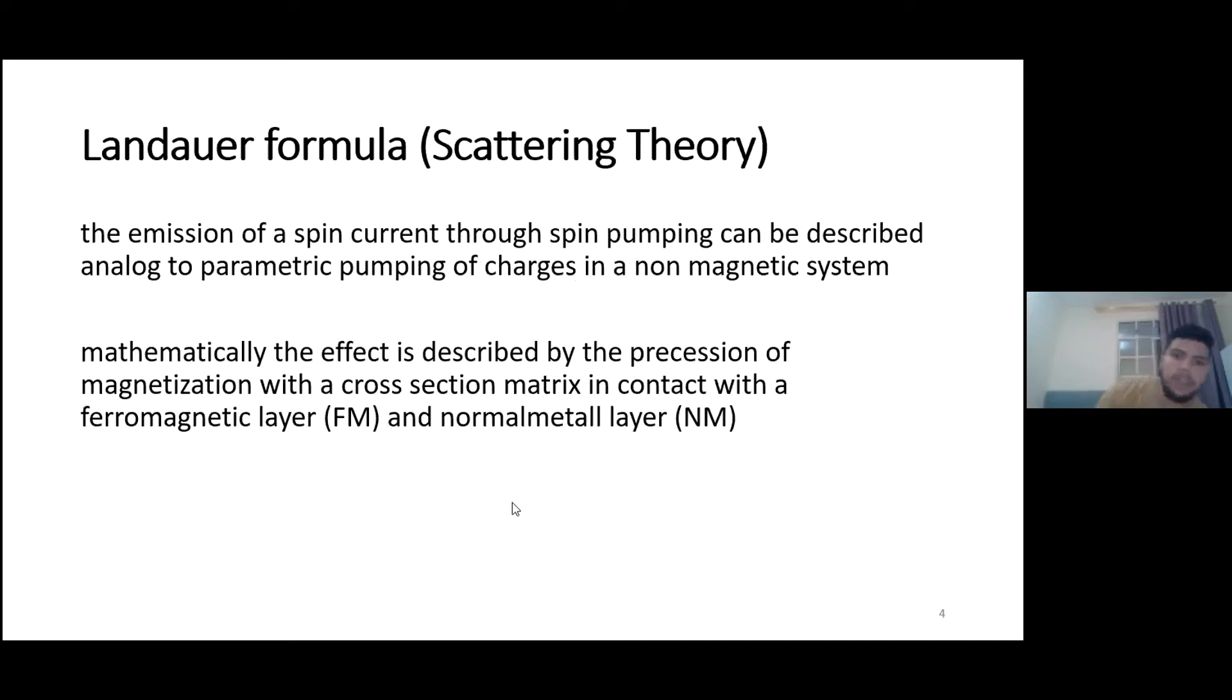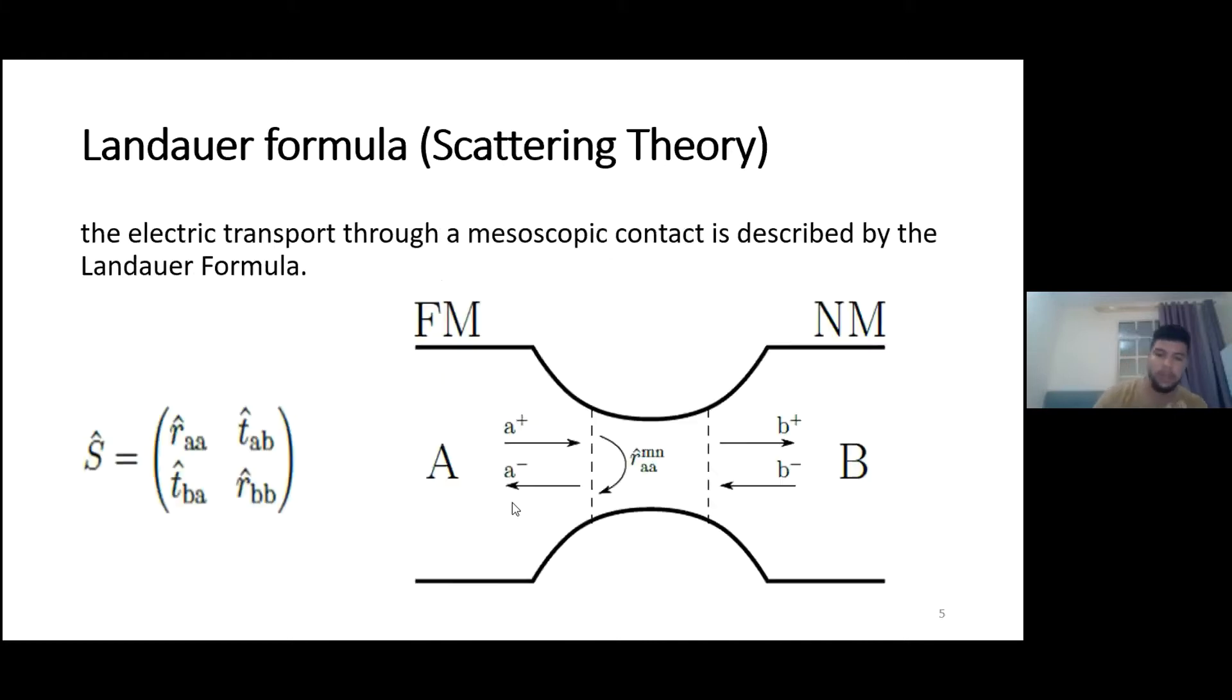Then about the main theory, the Landauer formula, the scattering theory. The Landauer formula is the emission of a spin current through spin-pumping can be described analog to the parametric pumping of charges in a non-magnetical system. And mathematically it is described by, we describe the precession in a scattering matrix. If we have a contact layers like the ferromagnetic layer and the normal layer. We have a transition surface of FM and NM, the ferromagnetic layer and the normal metal layer. And this is the so-called scattering region or a mesoscopic contact.